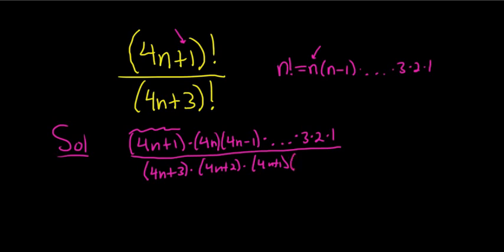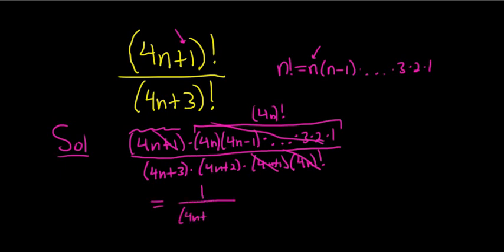So I'm going to take a shortcut to show you something. The rest of it is 4n factorial, which is precisely what's here. This is the same thing as 4n factorial. So all of this cancels with this, and this one cancels with this one. And so we're left with 1 over 4n plus 3, 4n plus 2. And that's the final answer.